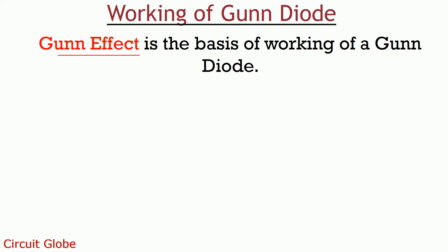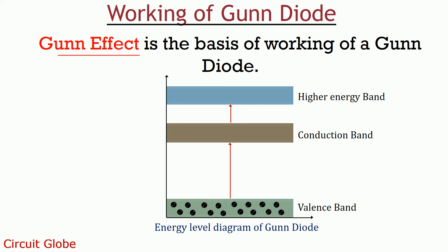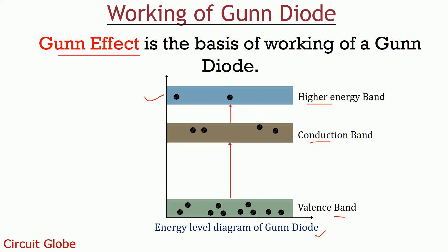The band structure of the active layer consists of three energy levels. On applying external potential to a Gunn diode, the electrons present in the valence band move to the conduction band. As we increase the external potential further, the electrons present in the conduction band move to a higher energy state above the conduction band — this is why the device is also known as a transferred electron device. In this higher energy state, electrons are less mobile, so with the increase in potential, current starts decreasing, causing the negative resistance characteristic inside the device. After a certain voltage, electrons at the higher energy state gain sufficient energy and return to the lower energy state, thereby increasing the current with the increase in voltage.